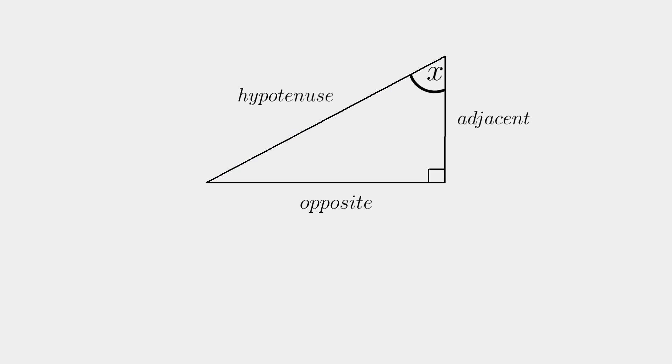For the next triangle I'm going to label the sides as HOA. Sine of X is opposite over hypotenuse, cosine of X is adjacent over hypotenuse and tangent of X is opposite over adjacent.